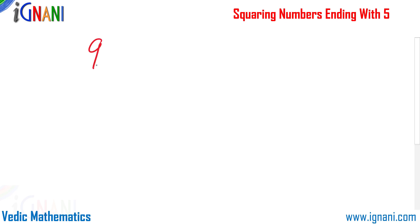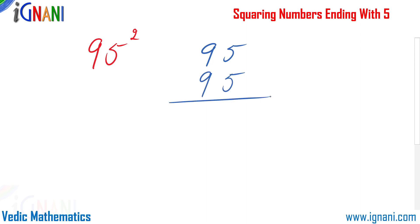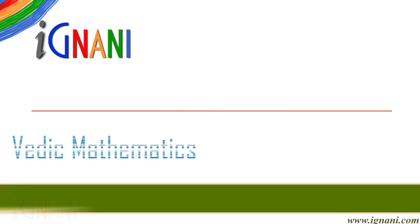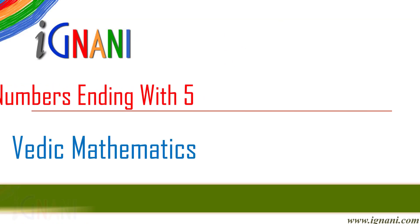Hello friends! To find out the square of 95, which is 95 multiplied by 95, is as easy as writing 9025. Would you like to know how? Then watch this video.